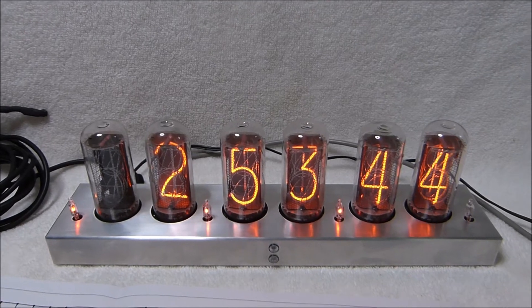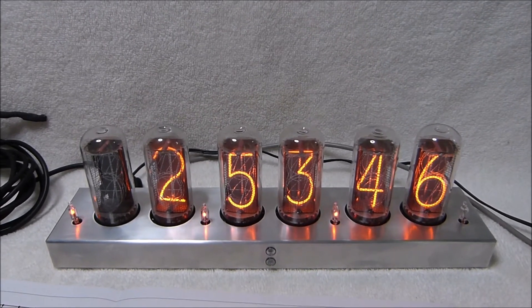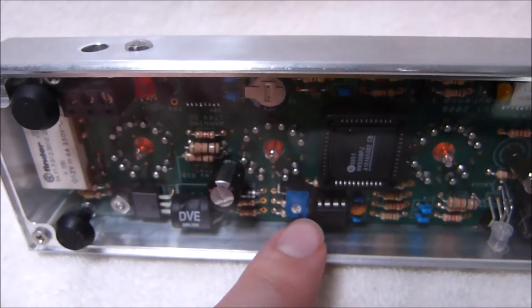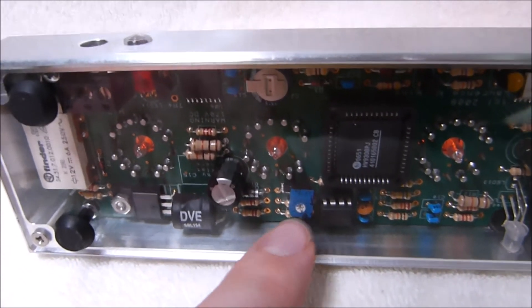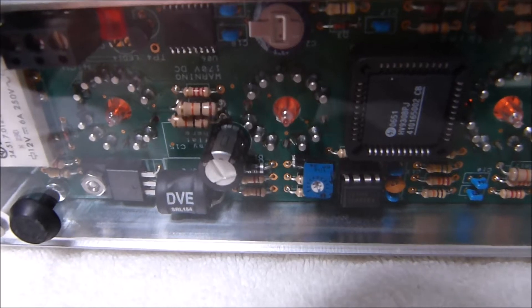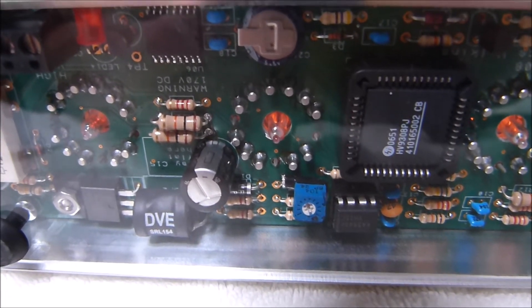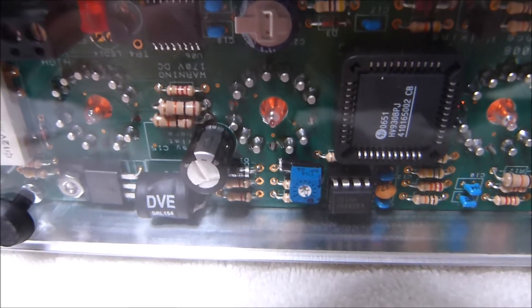With the clock all back together and the tubes installed, I adjusted the high voltage up until it reached 175 volts. You can see the potentiometer I added right there. Mounted underneath it is the 1.5 mega ohm resistor. I'd say my modification looks pretty nice. It doesn't really look out of place.